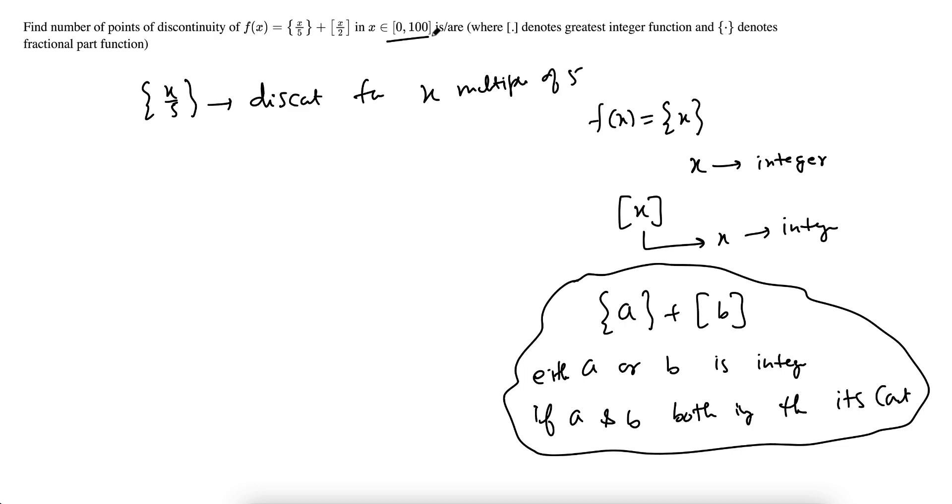Now they already mentioned x is between 0 to 100. How many integers are there which is multiple of 5? 21. How you know? Because 1 to 100, multiple of 5 means greatest integer of 100 by 5 means 20, and 0 is also multiple of 5. So there is 21. So fractional part of x by 5 will be discontinuous at 21 points.